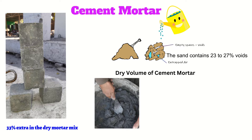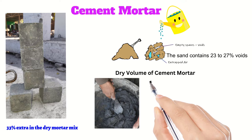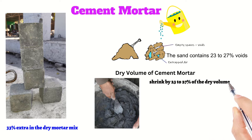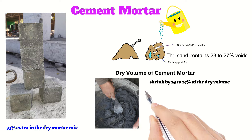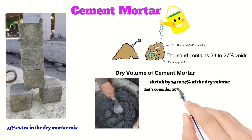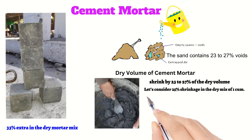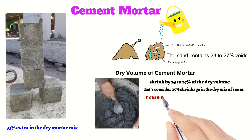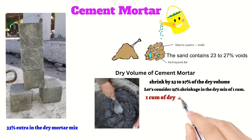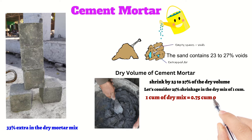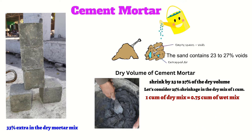The wet mix shrinks by 23 to 27 percent of the dry volume. Considering 25 percent shrinkage, 1 cubic meter of the dry mix is equal to 0.75 cubic meter of the wet mix.